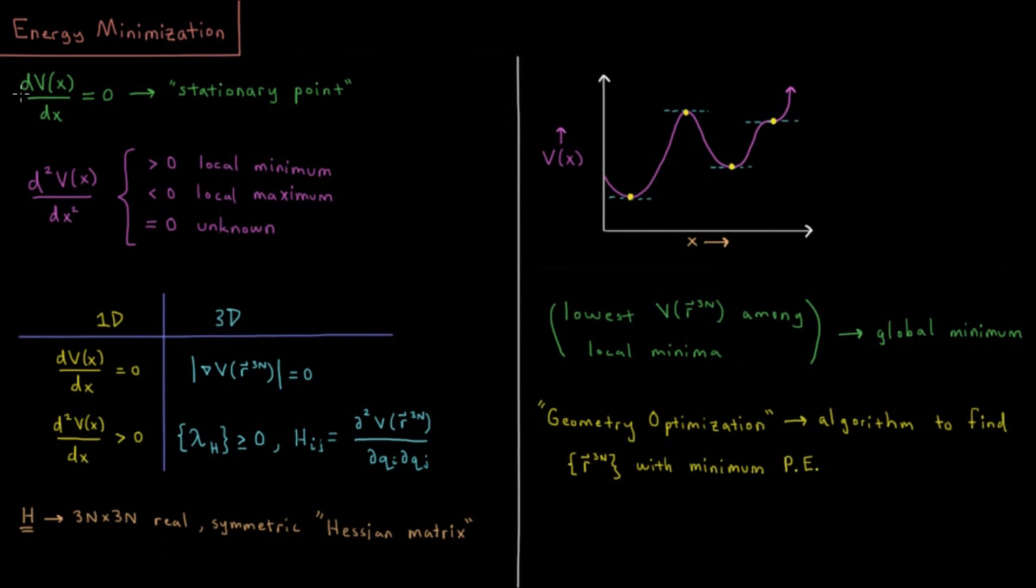So any place where the derivative or first derivative of the potential energy with respect to that coordinate is equal to zero is what we would call a stationary point or in calculus what you would call a critical point for a one dimensional function.